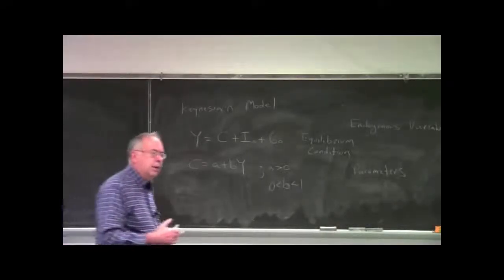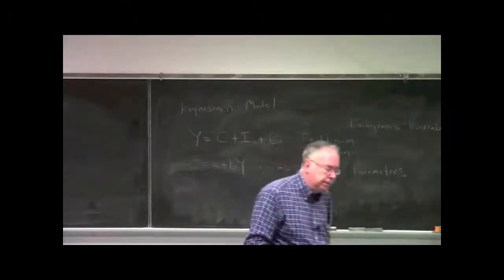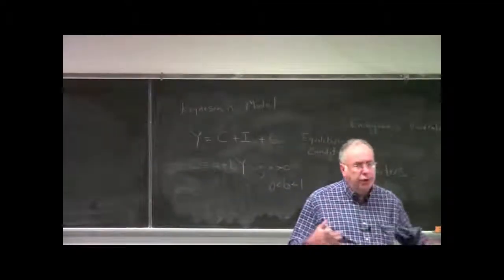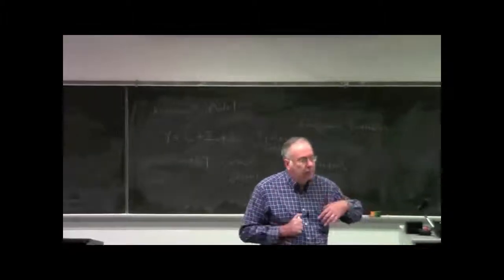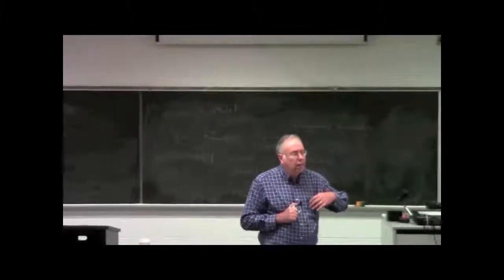And last class, what was another name that we used for parameter A? Remember? Autonomous consumption. Autonomous consumption. And autonomous consumption is what in words? They could still spend using their savings even when income is 0. Right.